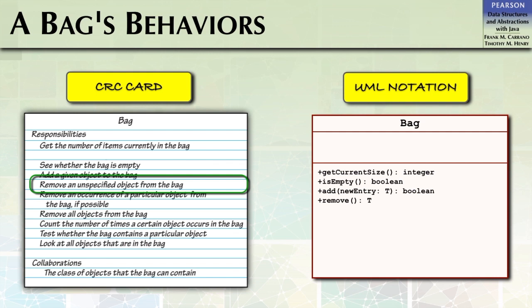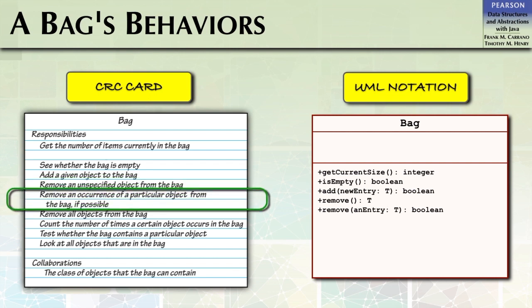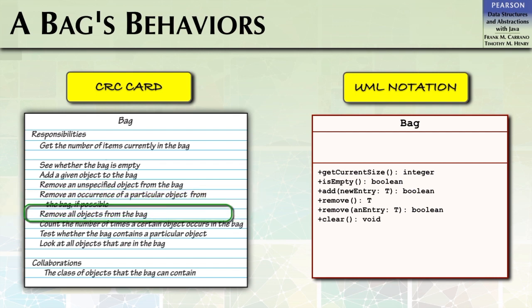Our private helper method ensureCapacity should check to see if the array is filled, and if so, double its capacity using one of the algorithms we discussed earlier. So, with only a few minor changes, we have an ADT bag implementation that uses an array to store the items in the bag, but always has enough capacity for us to add additional items.